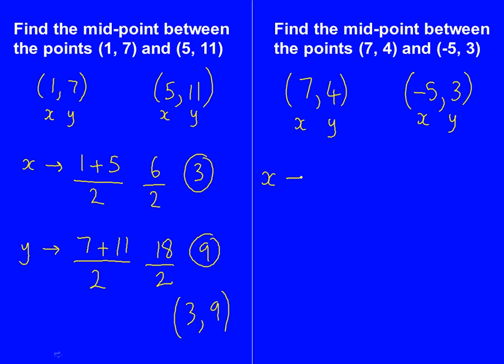And we'll do the x coordinate first. So the two x coordinates are 7 and minus 5. And we're going to add them up and we're going to divide by 2. So 7, add minus 5 is the same as just 7, take away 5, which is 2. Divided by 2, 2 divided by 2 is 1.